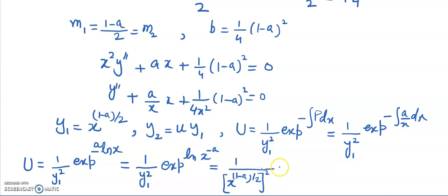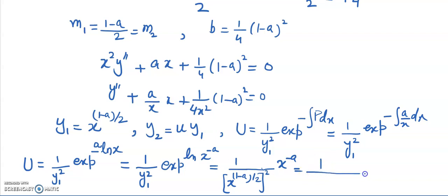Since exp(−a·ln x) = x^(−a), and y₁² = x^(1−a), we have U = x^(−a) / x^(1−a) = x^(−a) · x^(a−1) = 1/x. So the value of U is 1/x.